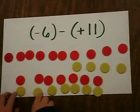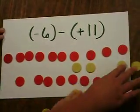Then, we now have 11 positive tiles, so you need to subtract those. You basically just take these out.